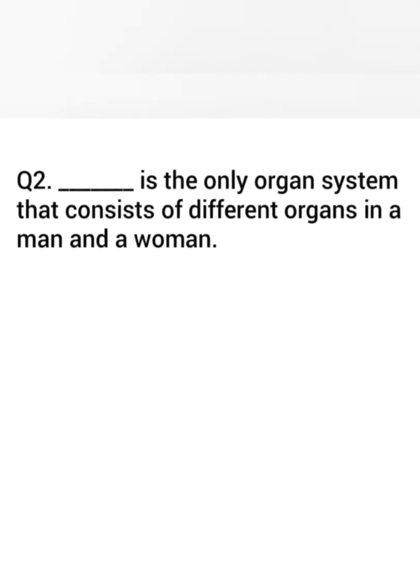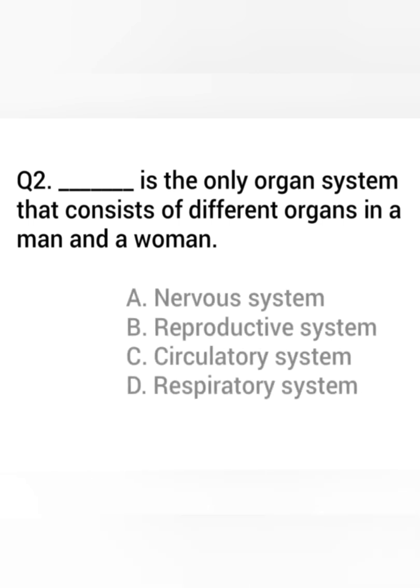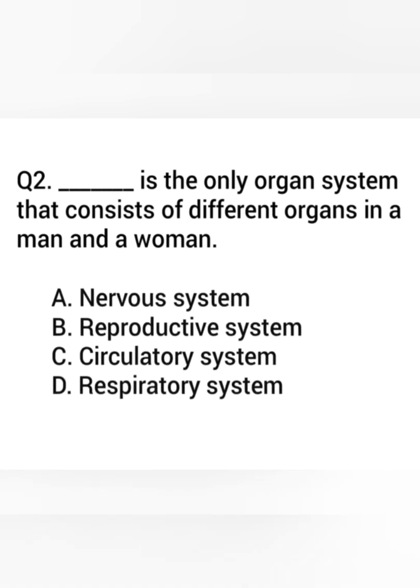Question 2. Dash is the only organ system that consists of different organs in a man and a woman. Answer: Reproductive system.